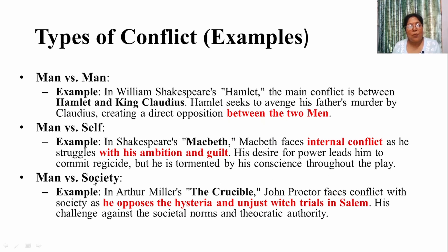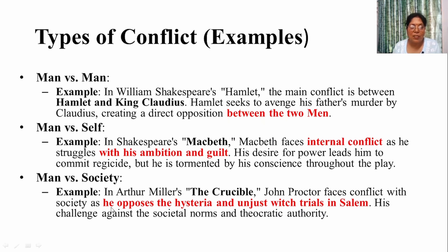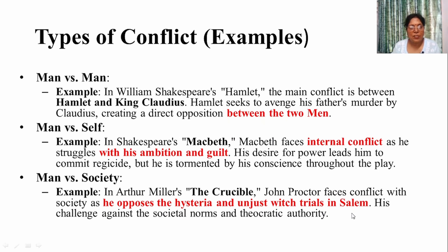The example of man versus society is Arthur Miller's The Crucible. In this very famous play, the character John Proctor faces conflict with society as he opposes the hysteria and unjust witch trials in Salem. A whole society is against Proctor, so the struggle or conflict in The Crucible is man versus society.